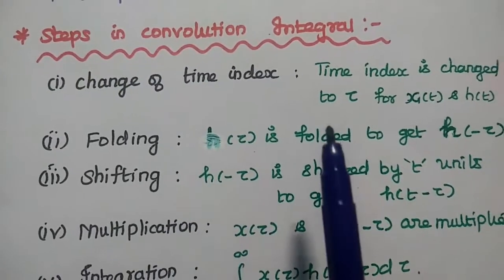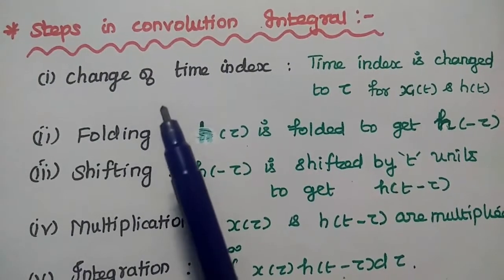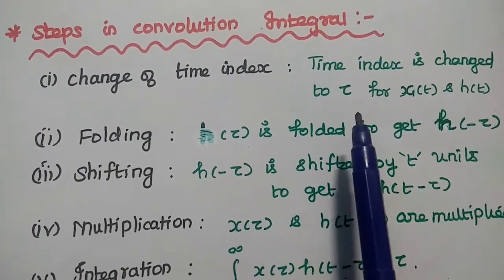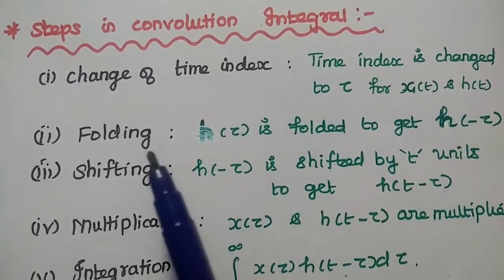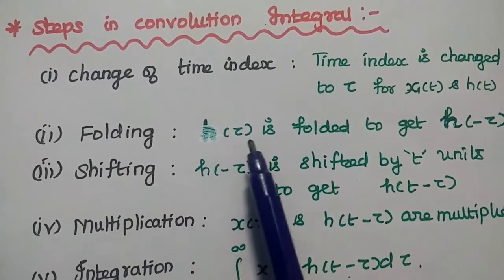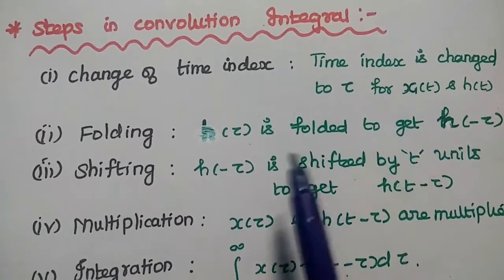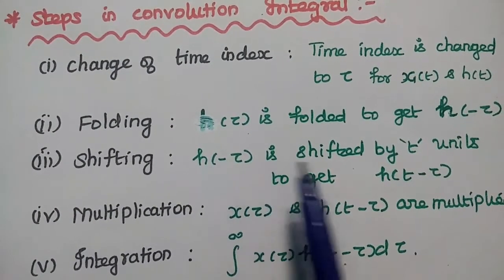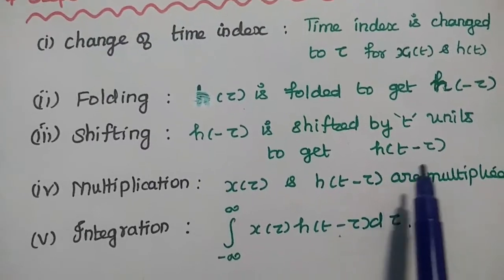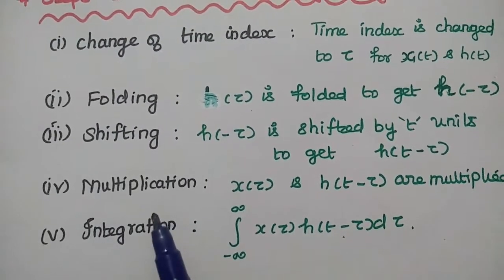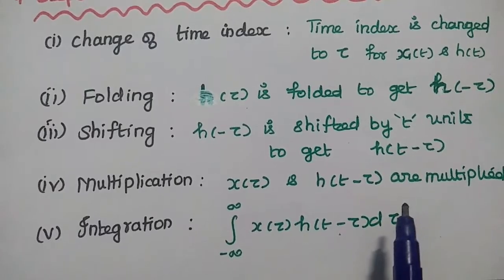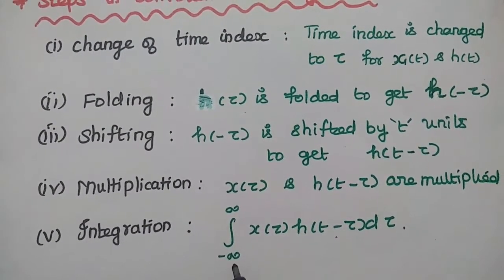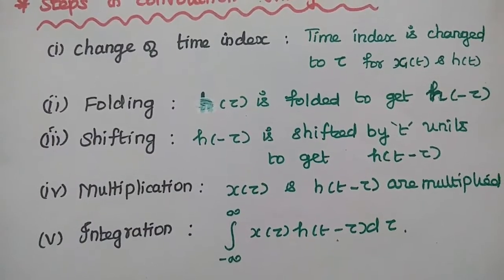The steps in convolution integral are: first, change of time index — the time index is changed to τ for X of t and H of t. Next, folding — H of τ is folded to get H of minus τ. Then shifting H of minus τ to H of t minus τ. After that, multiply X of τ with H of t minus τ. Then integrate and take the limits from minus infinity to plus infinity.